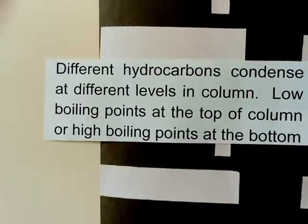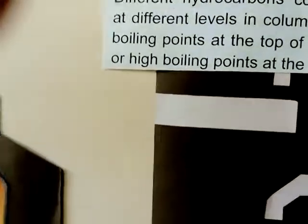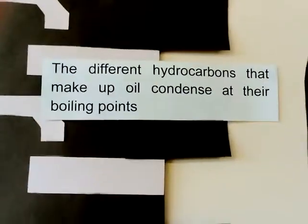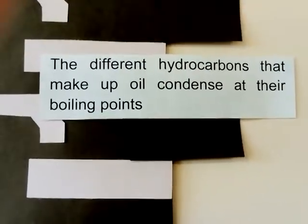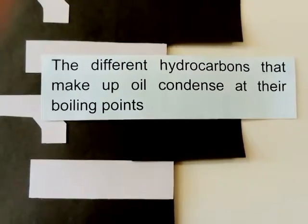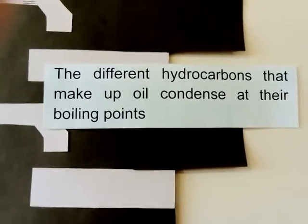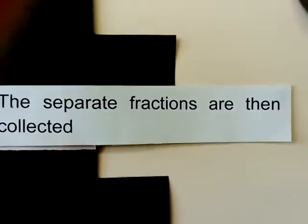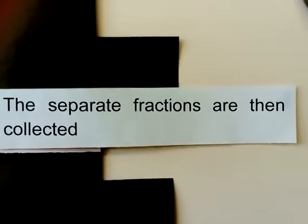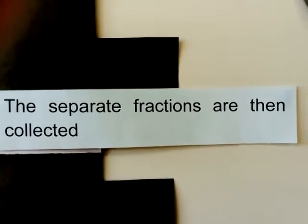The different length chains condense at different points and come off at different stages down the column. The fractions are then separated and can be collected.